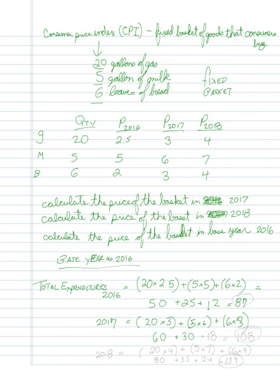In 2017, I'm looking at 20 times 3 plus 5 times 6 plus 6 times 3. So 60 plus 30 plus 18, that's equal to 108. And then in 2018 we're looking at 20 times 4 plus 5 times 7 plus 6 times 4.